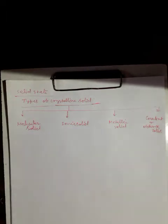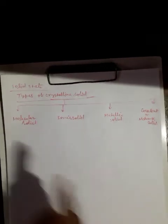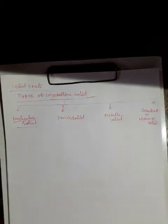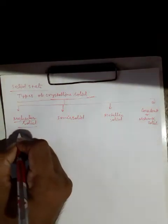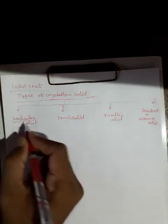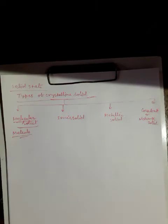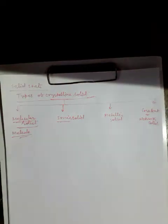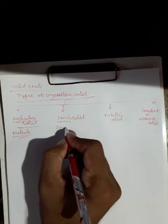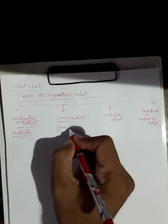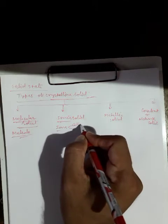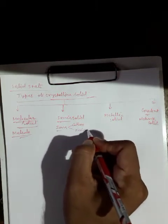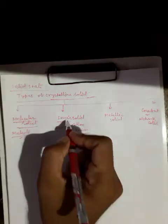The name of each type of crystalline solid indicates the nature of its constituent particles. Molecular solid indicates that the constituent particles will be molecules. Ionic solid has ions as its constituent particles — that is, two types: cations and anions.